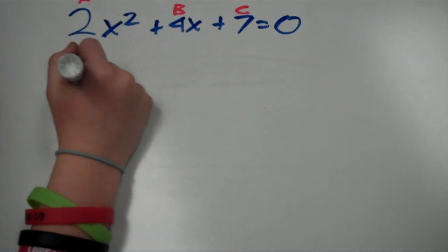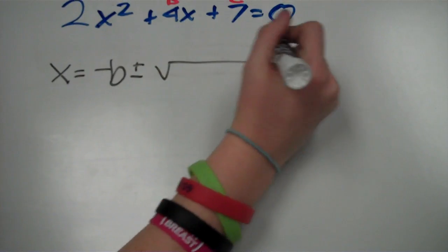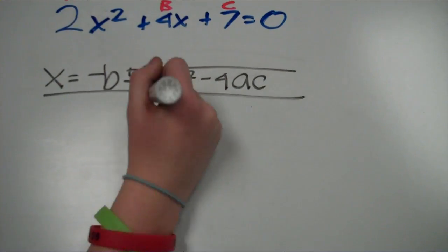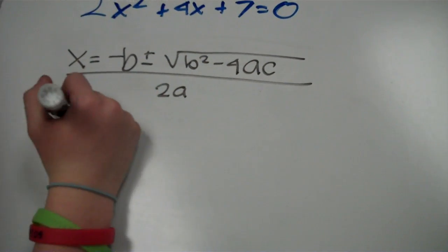which is x equals negative b plus or minus square root b squared minus 4ac all over 2a. And you have to plug in the numbers,